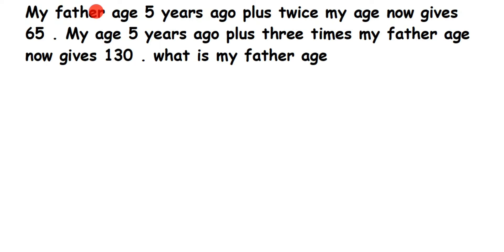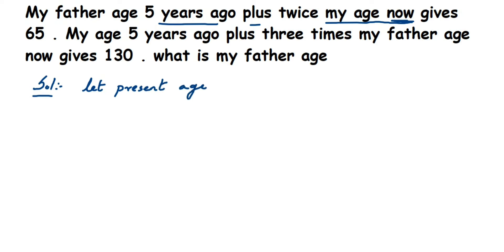What we're going to do is find the ages by taking variables. You can take any variable — in this case I'm going to take X and Y, but you can take A, B, P, Q — anything. Now, they're comparing the present age with five years back. We're going to assume X and Y to be the present age of father and son. So let the present age of father be X, and let the present age of son be Y.